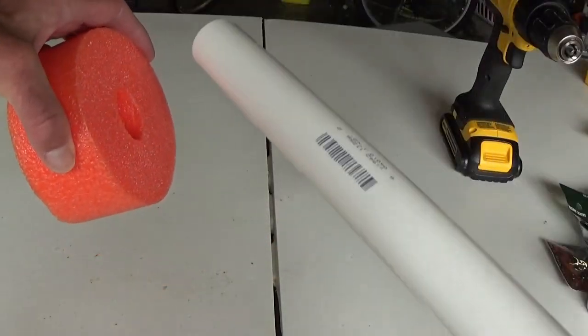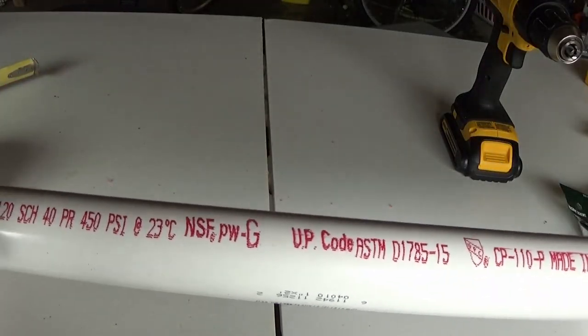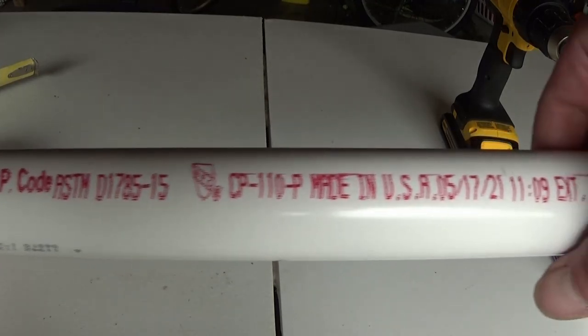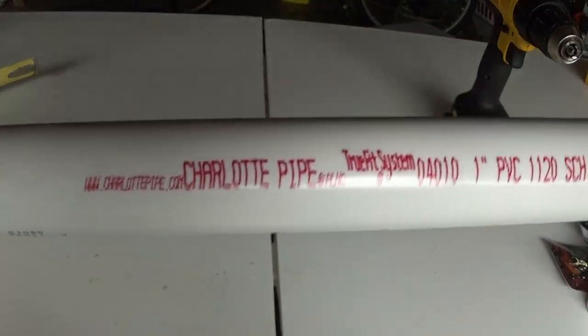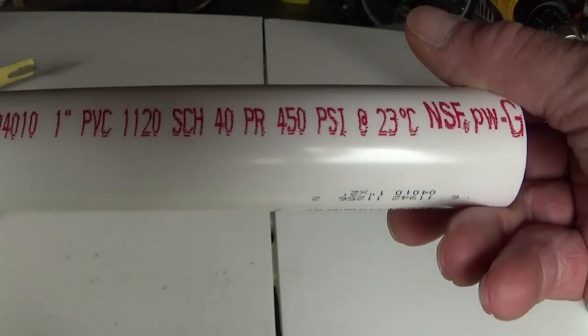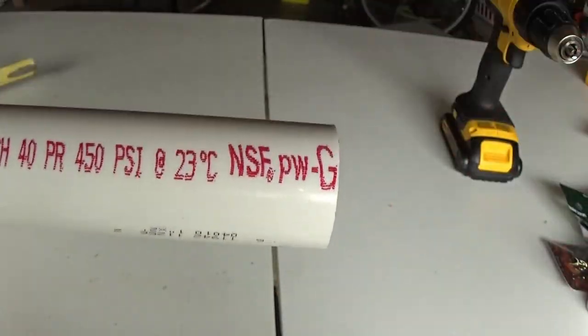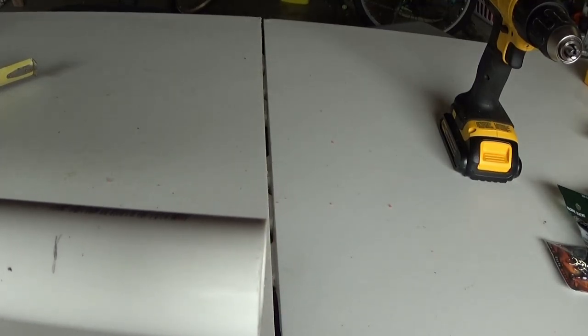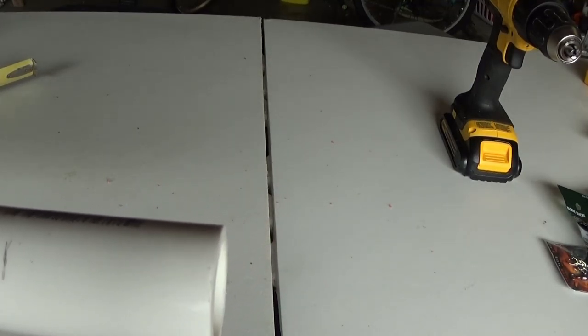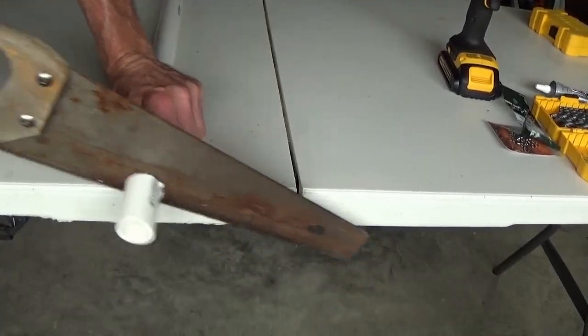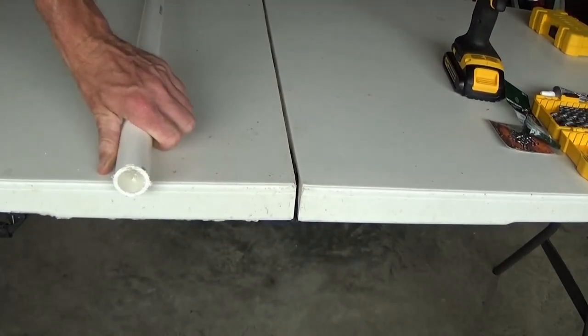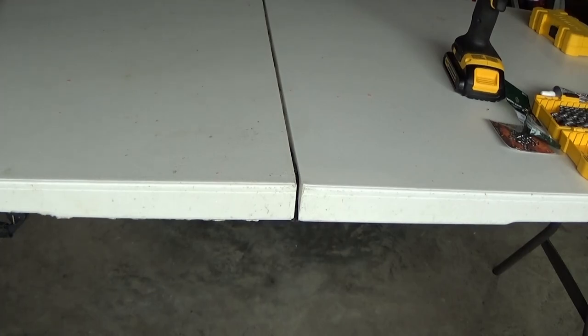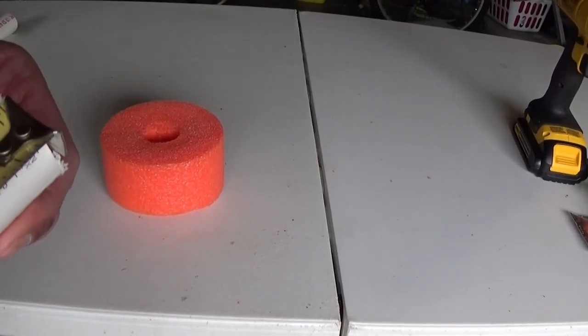Next, we'll cut this PVC pipe. One inch. I got my mark cut right here. I'm going to cut it off. You can use any kind of saw you want. About two inches.